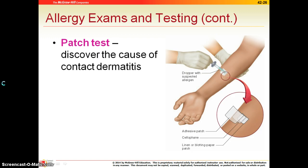A patch test is usually done for contact dermatitis — if something seems to irritate the skin. They take a piece of gauze and soak it in whatever allergen they think is causing the reaction, place it against the patient's skin, and then stick a clear piece of cellophane — almost like plastic — to seal it in and tape it down. They come back in anywhere from five minutes to about an hour, and if they remove it and see hives or itching underneath, the patient is allergic to that object.